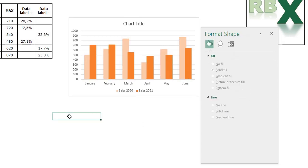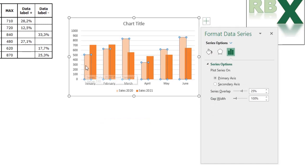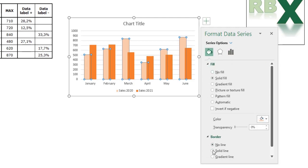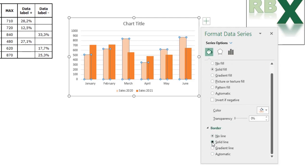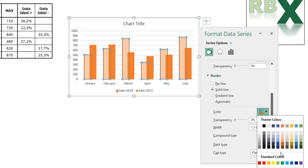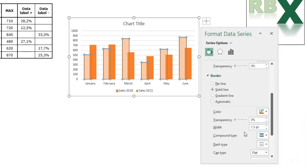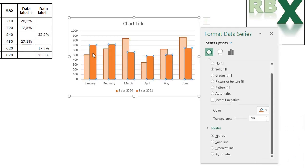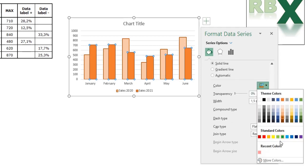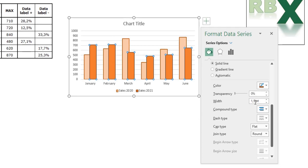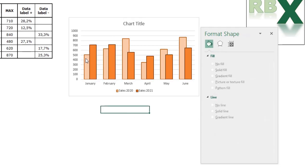Now we are going to create a line around our bars. Select your bar chart series and press Ctrl+1 to open Format Data Series. Go to Fill & Line, then the Border menu, and choose a solid line. The color is good and the width is 1.5. Select your other series and also add a solid line for the border — same color, width 1.5. Now we've added lines around the bars.